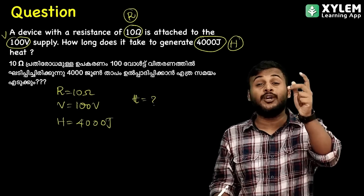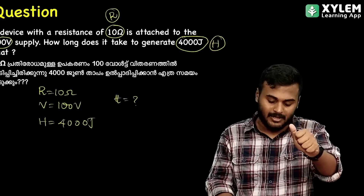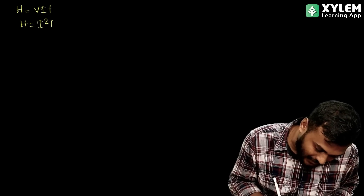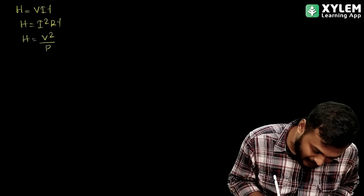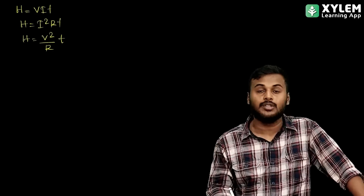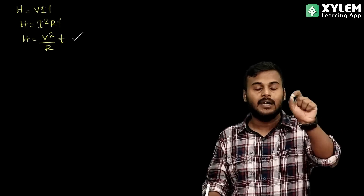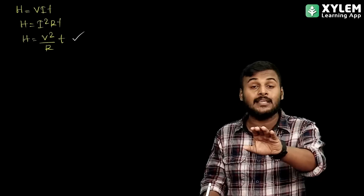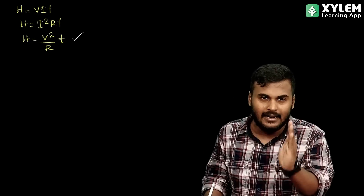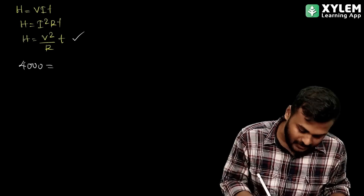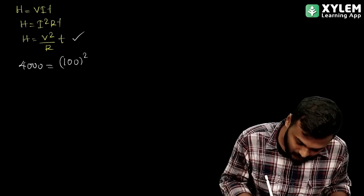Now we have H, V, R, T. These three parameters are related to the equation. We have the equation: H equal to VIT, H equal to I squared RT, H equal to V squared by R times T. Here are the three parameters. Now we have to connect three of them. H equal to V squared by R times T. This is 100 squared divided by R.